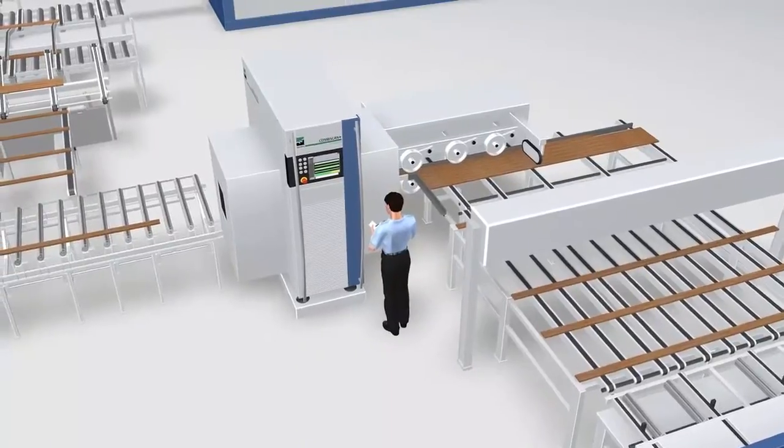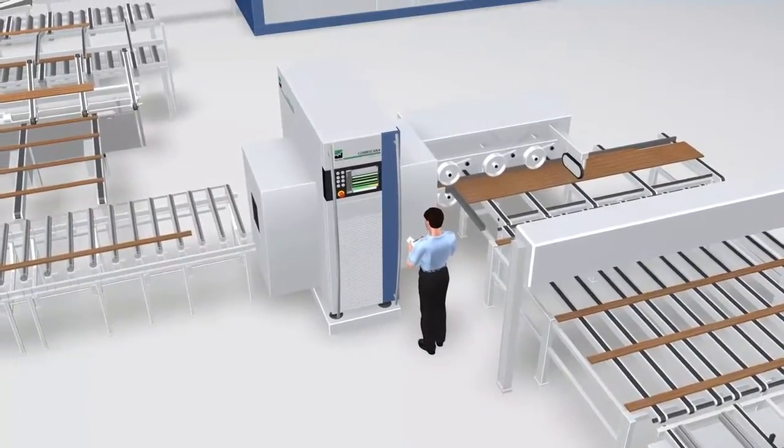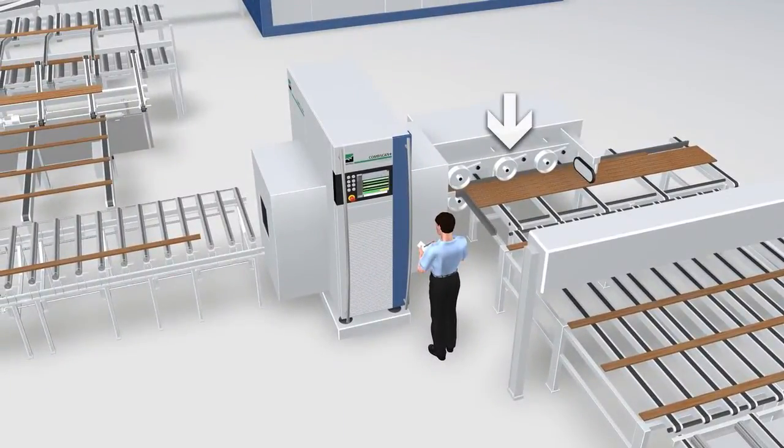The CombiScan Plus C400 is fed by a high speed accelerator that can speed up the boards to up to 300 meters or approximately 1000 feet per minute.